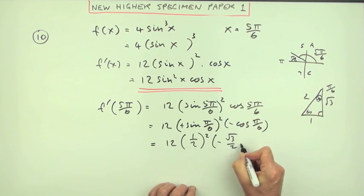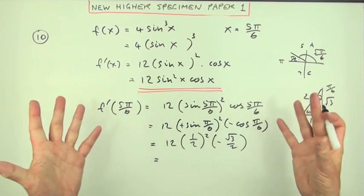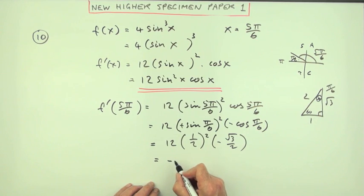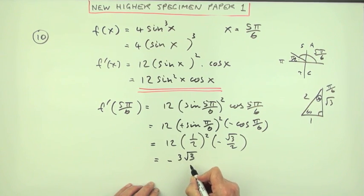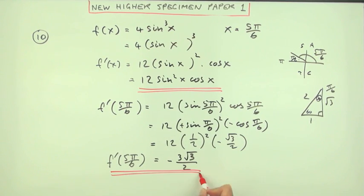This is all just for one mark. A half squared is a quarter, four into twelve goes three, so it's three times that, so it's negative 3√3/2. Yeah, all of that work for just one mark.